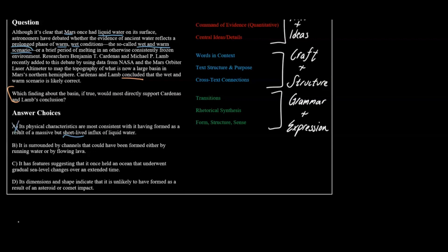Let's look at B. Well, lava isn't really directly supporting our claim, so we can rule out B, especially because of this idea of 'either', meaning that it's really not a very direct correlation between flowing water and flowing lava. C: It has features suggesting that it once held an ocean that underwent gradual sea level changes over an extended time. Now, this one would make sense. Why? Because this prolonged thing is true. We can say prolonged is true. If there's an ocean, obviously we're going to have warm, wet conditions. Now, let's take a look at D, just to make sure that we can rule out D. D talks about an asteroid or a comet impact. Nowhere in this passage is an asteroid or comet impact mentioned, so we can clearly rule out D. That means our answer here is going to be C.